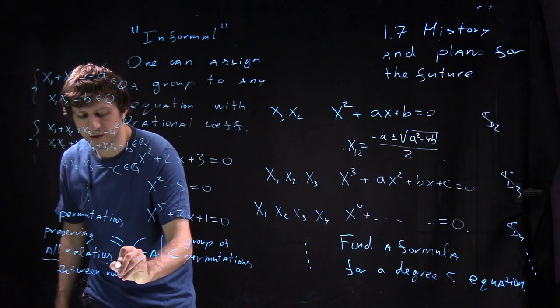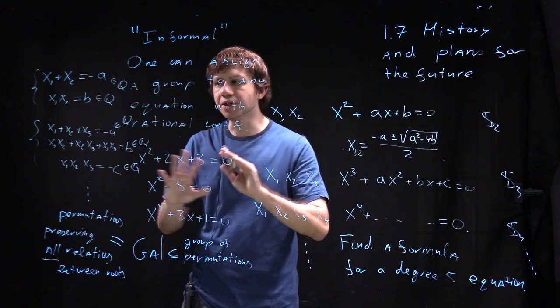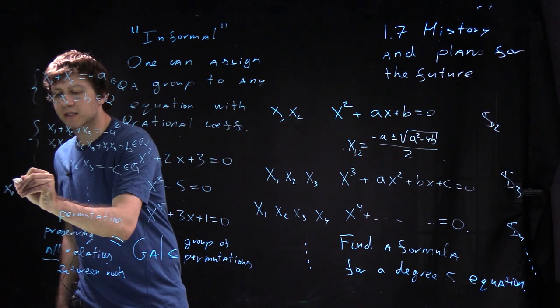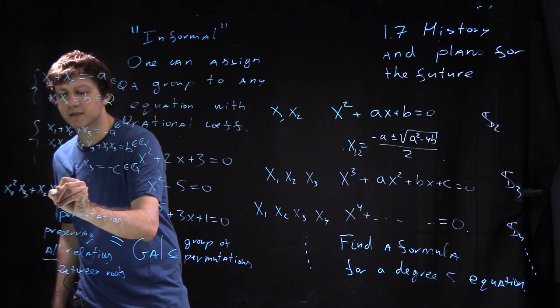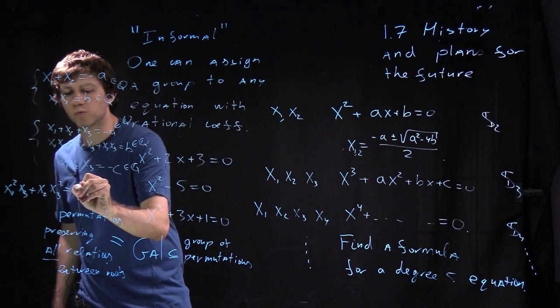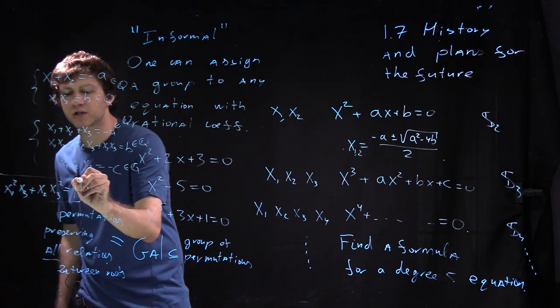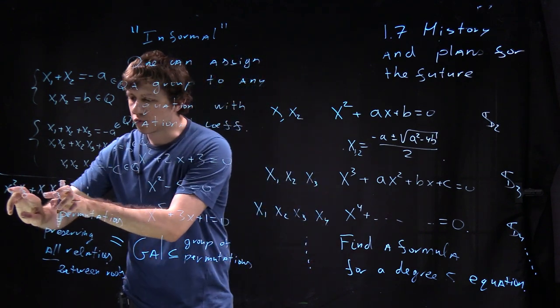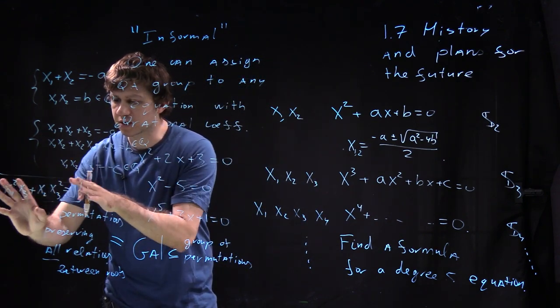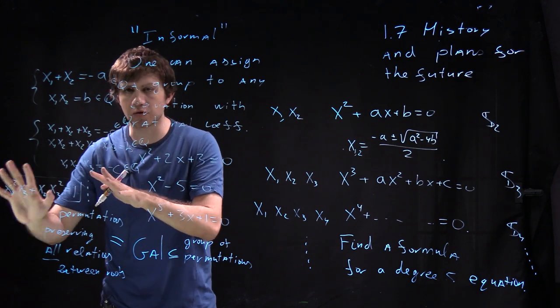So if by any chance some weird relation holds like say x1 squared x3 plus x2 x3 squared equal to 1 or some weird relation like that you want your permutation which is inside this group to take these elements and change them in a way that the relation still holds.